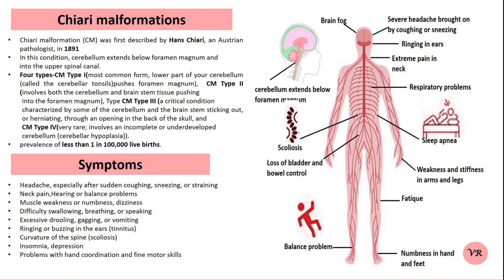Brain tumors or cysts in or near the brain stem or cerebellum can potentially exert pressure on the brain, leading to a Chiari malformation. Diagnosis of Chiari malformation often involves electromyography (EMG), nerve conduction studies, cerebrospinal fluid flow studies, and imaging tests like MRI or CT scans, which can reveal the herniation and other structural abnormalities in the brain and spine.